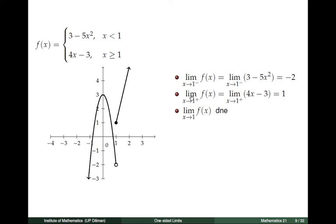On the other hand, the one-sided limit — the limit of f(x) as x tends to 1 from the right — requires us to consider x values very close to 1 but greater than 1. So the function is given by 4x minus 3. Taking the limit of 4x minus 3 as x tends to 1 from the right, we have 4 times 1 minus 3, which equals 1. Note that the left-hand limit and the right-hand limit both exist but are not equal: one equals negative 2 and the other equals 1. Since these two limits are not equal, the limit of f(x) as x tends to 1 does not exist.